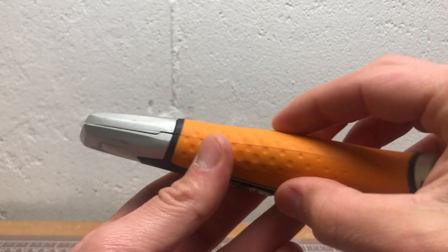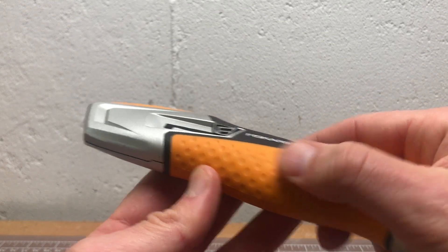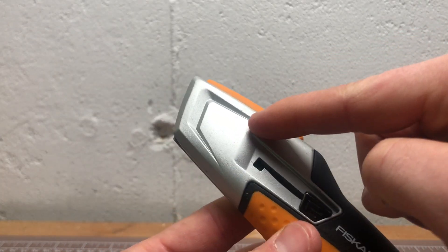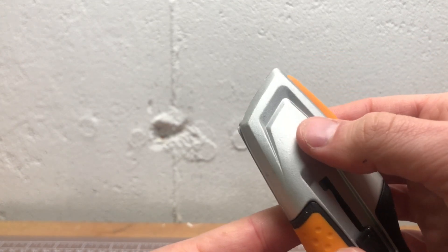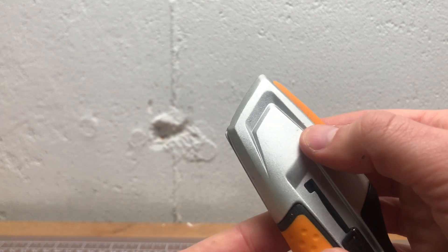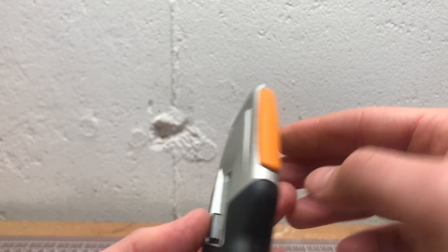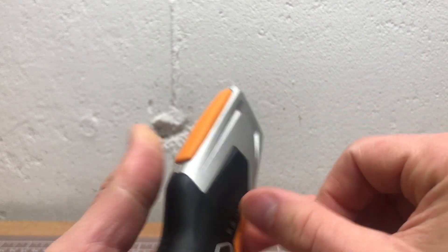So what do you get from the Fiskars Pro box cutter? You get a really sleek design. This is a rubbery grip, this is hard plastic, anything in gray is metal. I think it's probably magnesium. It's nice and light but also has a little bit of texture to it. You get a little bit of rubber up here.